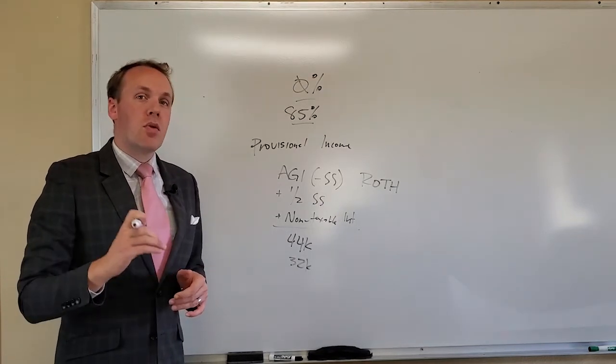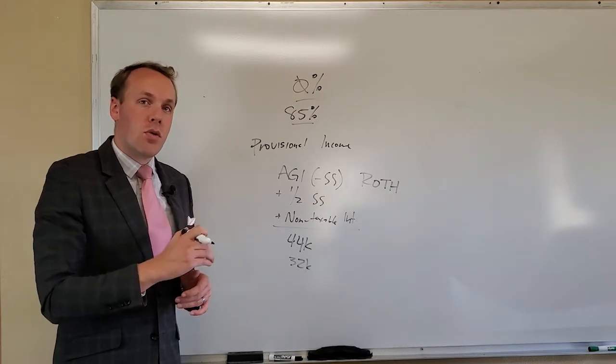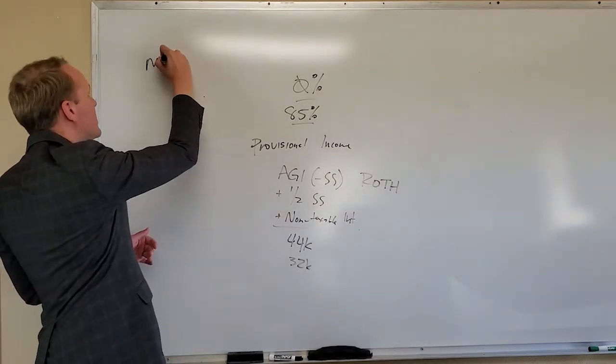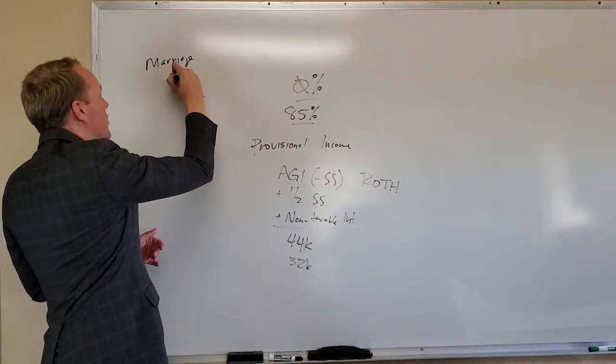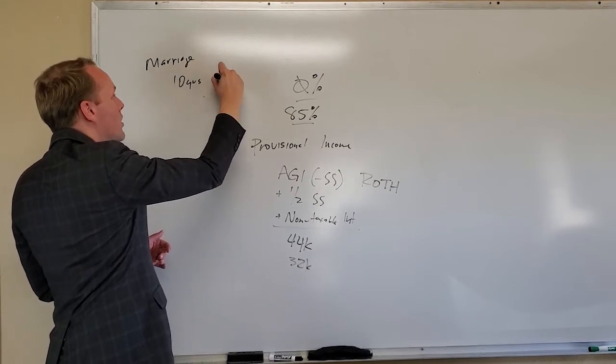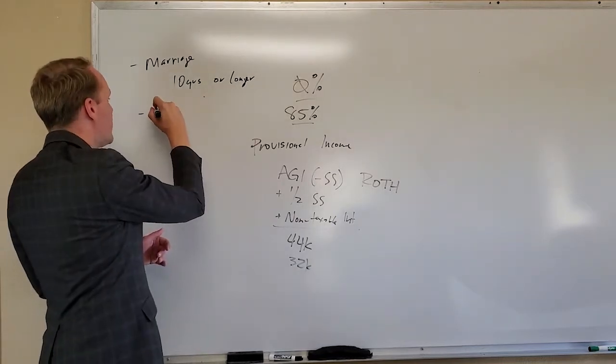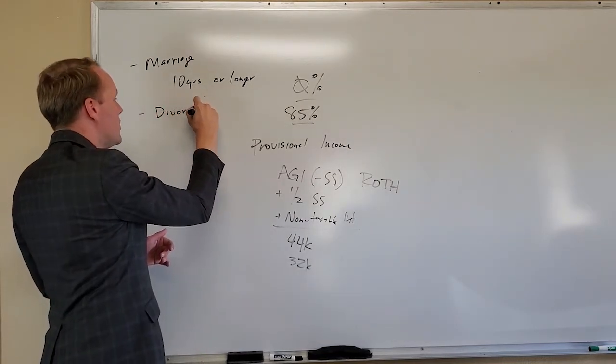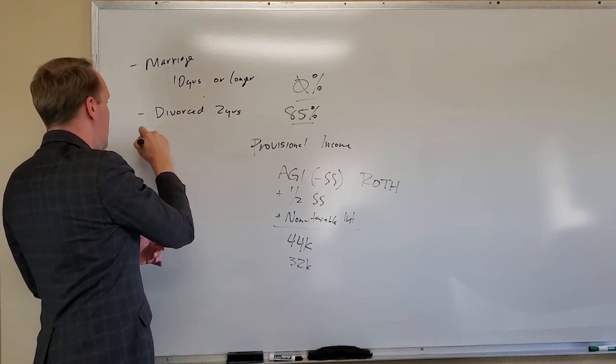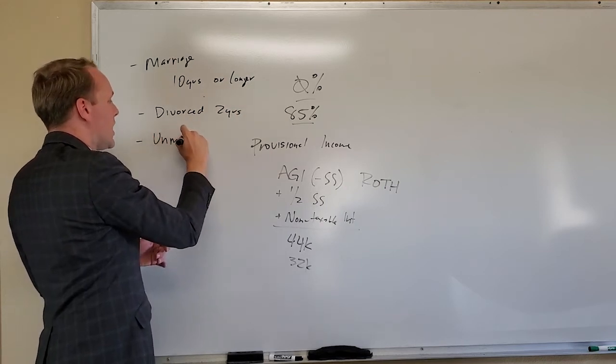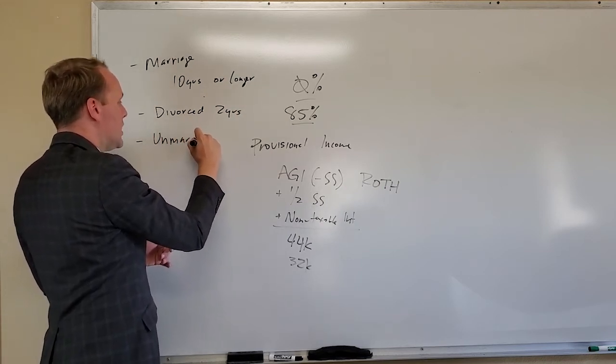You can file for spousal benefits if you are divorced as long as the marriage lasted for 10 years or longer. That's point number one. Point number two is you have to be divorced from that individual for two years. And three, you have to be unmarried at the time of the claim.